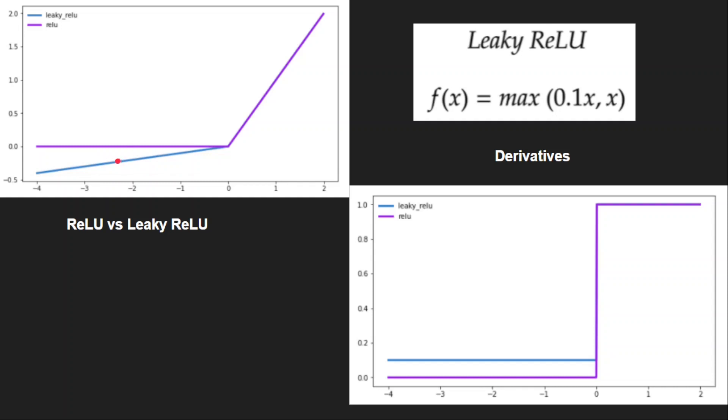Instead of zero, we take some portion of the input. So we have some portion of the output even for the negative values. So we don't have dead neurons problem. Even the gradient is not zero for negative values. It has some value here.